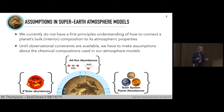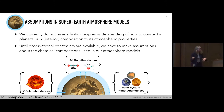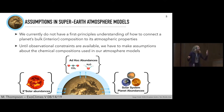Until we have observational constraints available — which we expect in the coming years — we have to make assumptions about what these planets are made of and resort to models. Some common assumptions include using solar abundances or some multiple of solar abundances, giving planets solar system planet abundances, taking Earth's atmospheric composition and putting it into our models, or using ad hoc abundances such as a CO₂-dominated atmosphere, a steam-dominated water atmosphere, or some ad hoc combination.